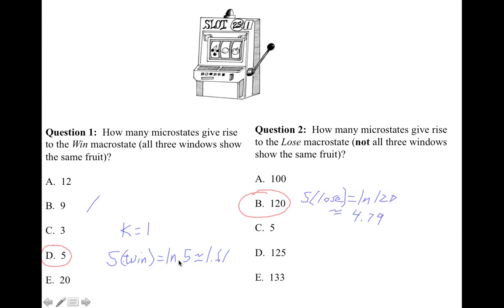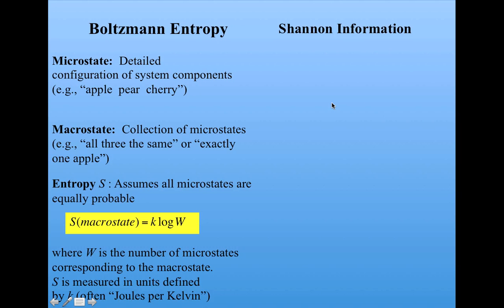The reason that Boltzmann used the natural log here was to get this in a certain range of numbers. Usually we're talking about systems with a huge number of microstates that give rise to particular macrostates, and the natural log was a way of scaling those very large numbers. You can see that the Boltzmann entropy of this macrostate is much smaller than the Boltzmann entropy of this macrostate, which was our intuition.